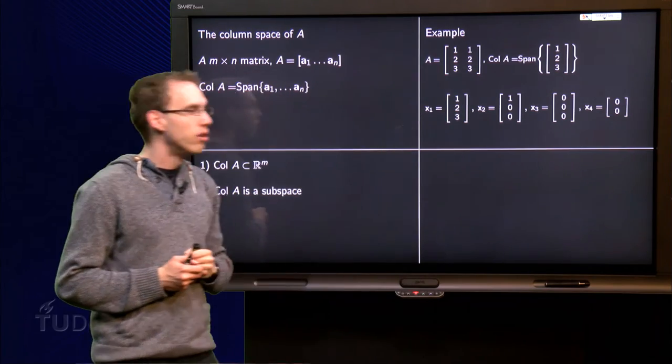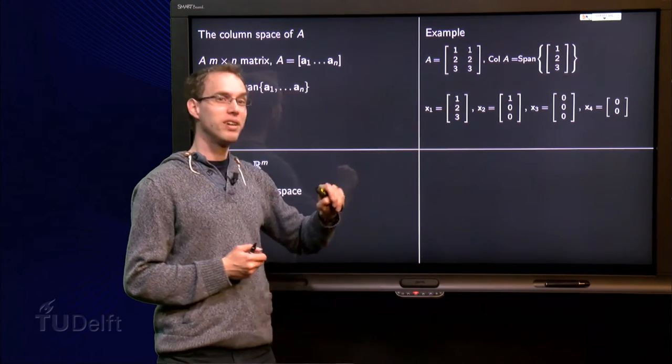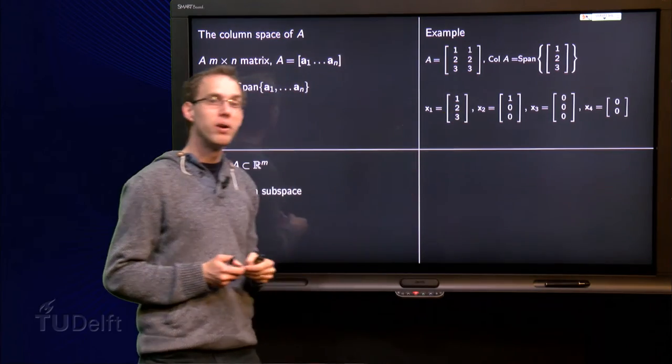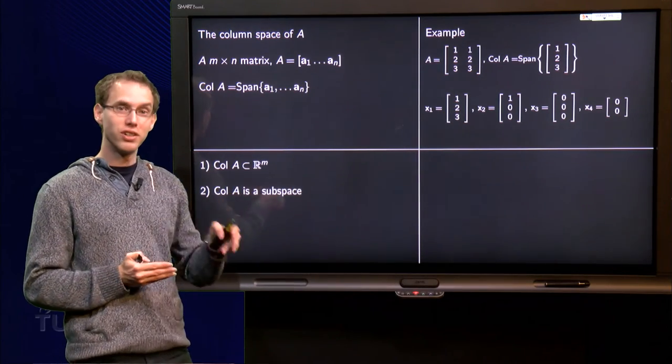Then I put four vectors here: x1 = [1, 2, 3], x2 = [1, 0, 0], x3 = [0, 0, 0], and x4 = [0, 0].